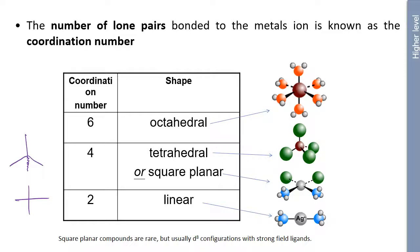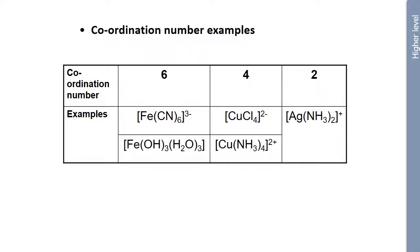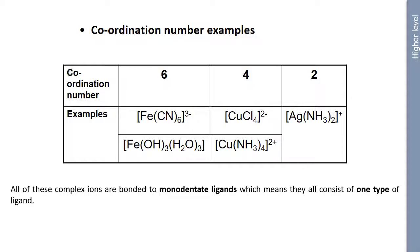And just a point, square planar compounds are rare, but usually D8 configurations with strong field ligands usually form these. So here's some examples of coordination complexes. So the hexacyanoion complex is 6-coordinate, this copper tetrachloride kind of anion is 4-coordinate, and the silver diamino complex is 2-coordinate. All of these complex ions are bonded to monodentate ligands, and monodentate pretty much means that they all consist of one type of ligand. 4-lobes is normally tetrahedral, but with a full D8, like copper, the strong ligands have become square planar.